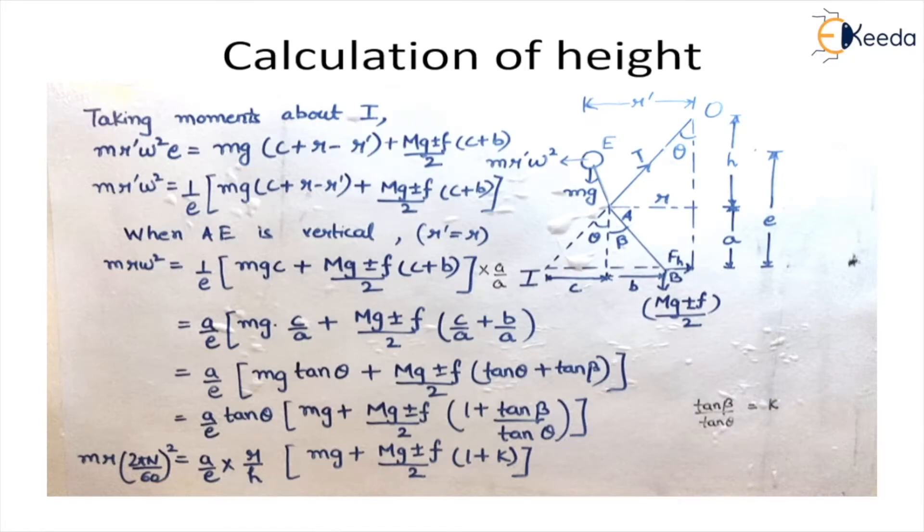Now to calculate the height and the speed, the formula remains the same whether you use it to calculate the height or the speed. Now again for derivation, we have taken the left hand half part of the governor. So here we see the ball, the fly ball is attached to an extension link.